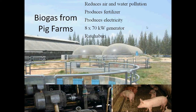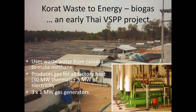Cassava has also been important. In a tapioca factory which uses cassava, a lot of wastewater is produced. That wastewater gets pumped into a big holding tank covered with a high-density polyethylene cover. Inside, methane is created, which gets pumped to generators to make electricity. These are three 1-megawatt generators which power the factory and also sell surplus back to the grid.